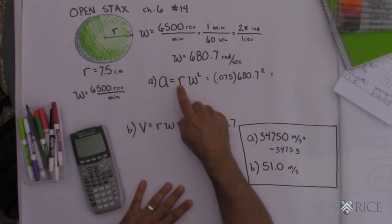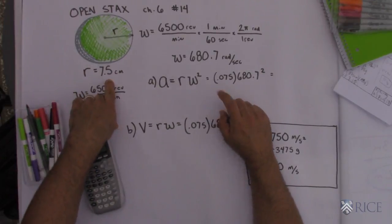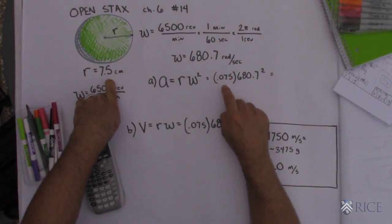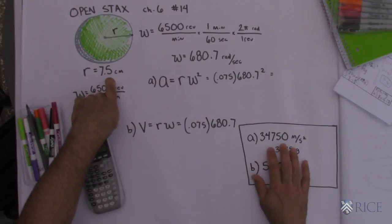So I'm going to take that number for angular velocity and plug it in right here. To get centripetal acceleration I took r omega squared. So I took the r that they gave me, 7.5 centimeters, and converted that into meters. I got 0.075 and multiplied it by omega squared and that gave me a huge number.